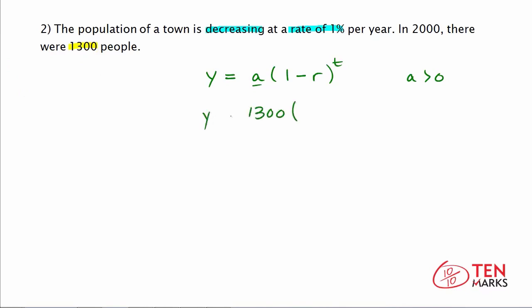We're going to keep y as is because we're just writing the function. We have 1 minus the rate, and the rate is 1%. Working with exponential decay, you have to change the percent to a decimal, so that would be 0.01. Substitute that value in for r, and this would be to the power of t.